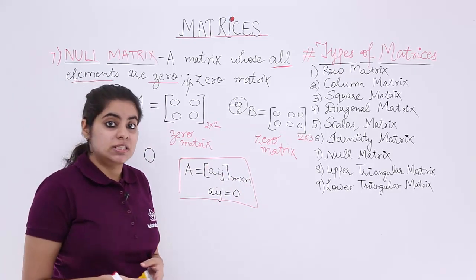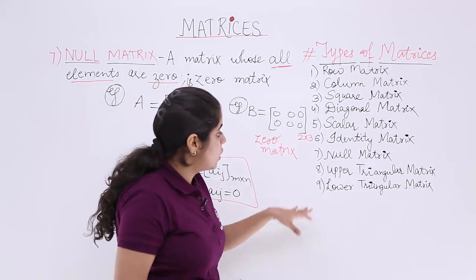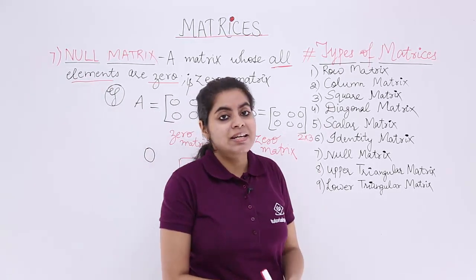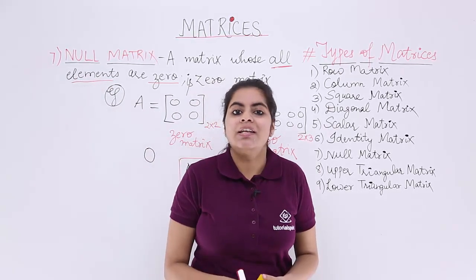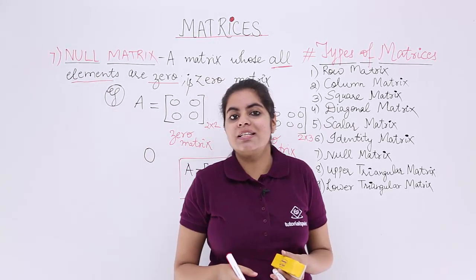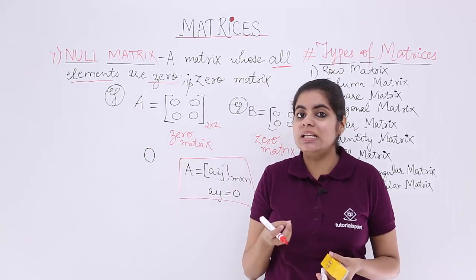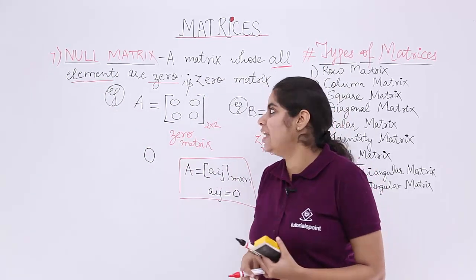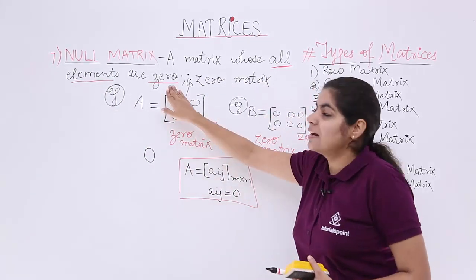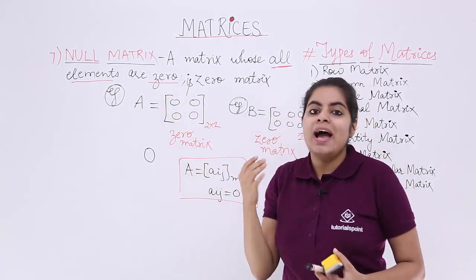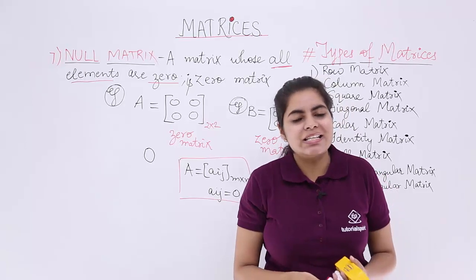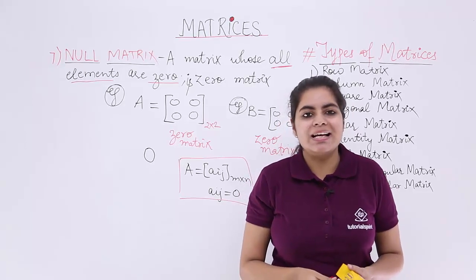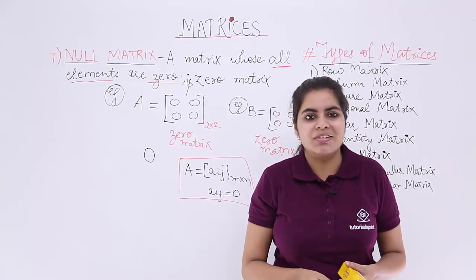In this video we saw an important type of matrix called the null matrix. Null matrix, as the name suggests, means a matrix wherein all the elements are zero, and hence this is also called a zero matrix.